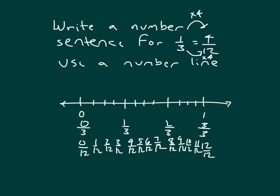Writing our number sentence: 4 twelfths equals 4 divided by 4, and 12 divided by 4. 4 divided by 4 is 1, and 12 divided by 4 is 3. So we have 4 of those twelfths — 1 twelfth, 2 twelfths, 3 twelfths, 4 twelfths — and when we divide by 4, we have 1 of those 3 groups of 4 that is shaded in. So 4 twelfths equals 1 third, just like within the area model, we're composing units to make that larger set.